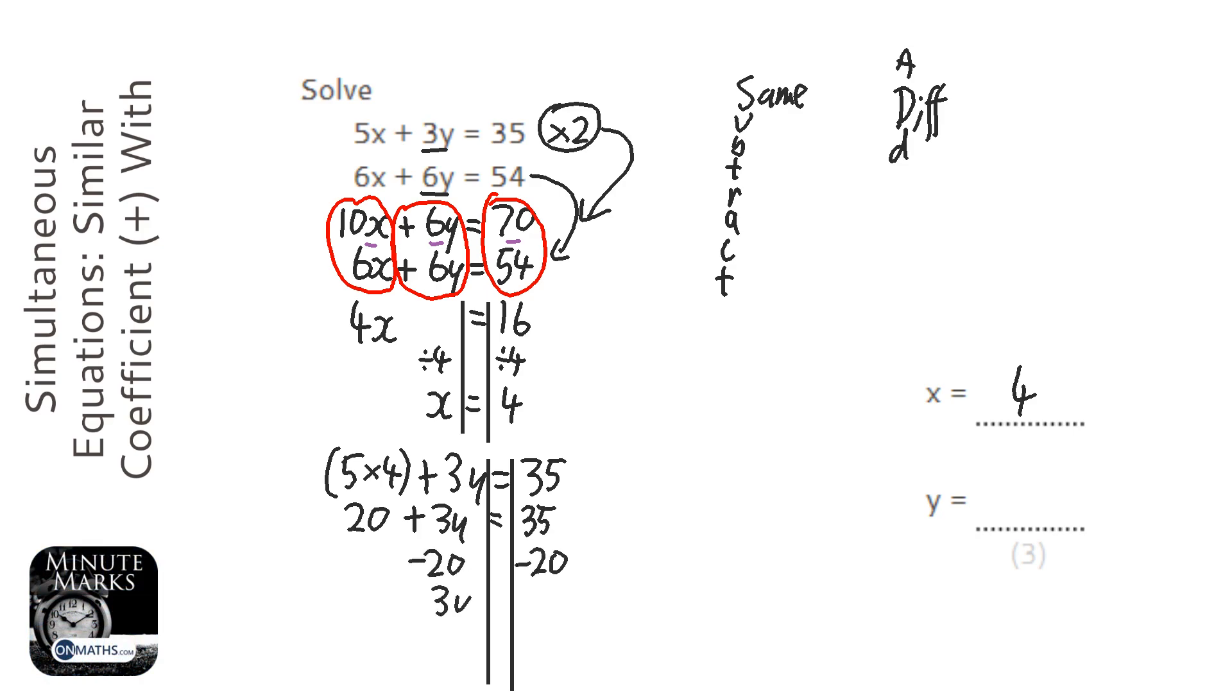So 3y equals 15, and then divide by 3 both sides. So y equals 3. No, it doesn't. Y equals 5.